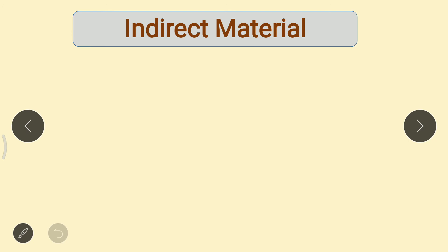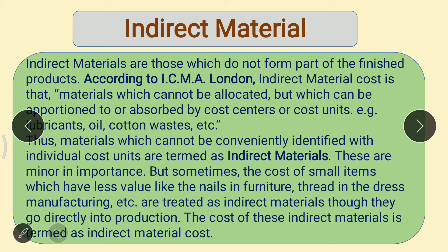Next is indirect material. Indirect materials are those which do not form part of the finished product. According to ICMA London, indirect material cost is that material which cannot be allocated but which can be apportioned to or absorbed by cost centers or cost units. For example, lubricants, oil, cotton waste, etc. Thus materials which cannot be conveniently identified with individual cost units are termed as indirect material.